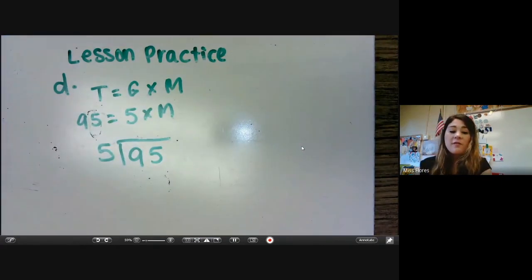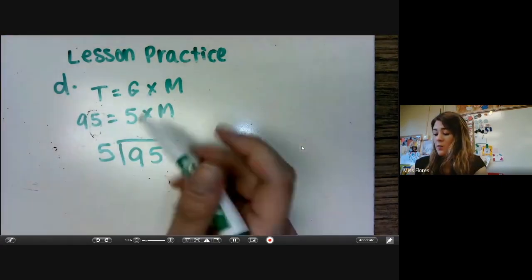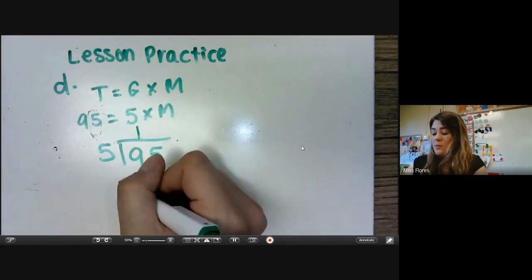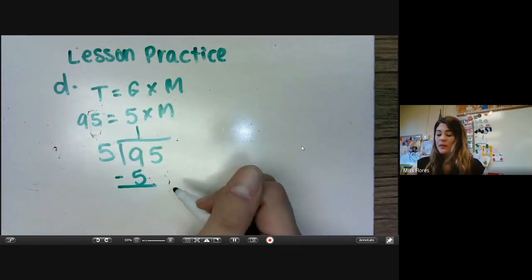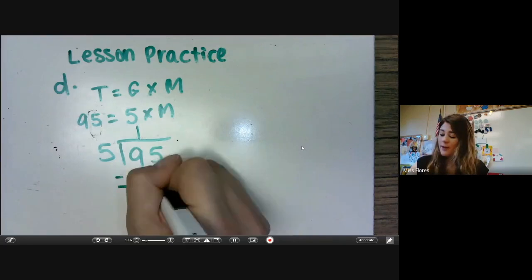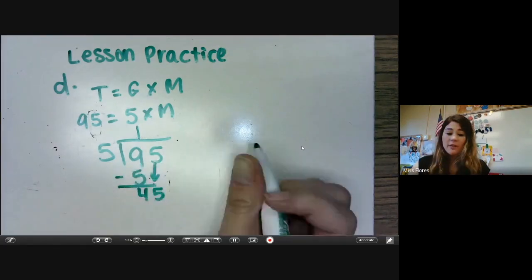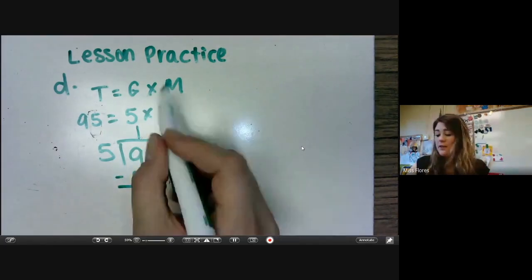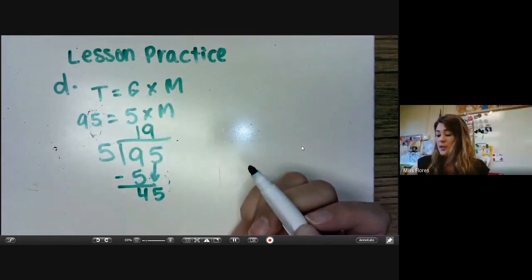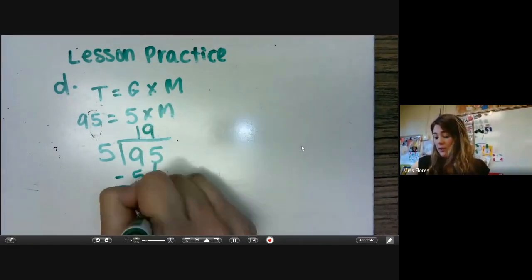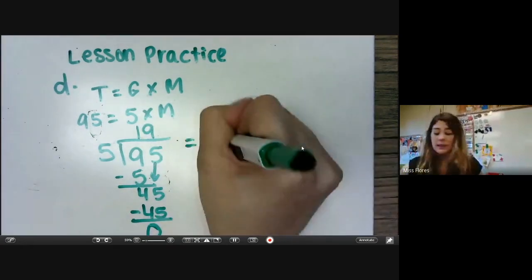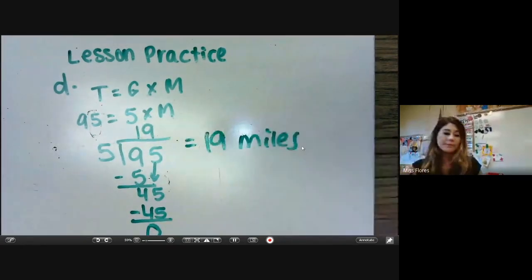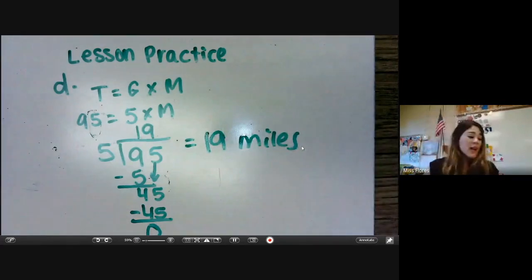So we need to do 95 divided by five. Five goes into nine one time. Five times one is five. So nine minus five is four. And then five comes down and makes it 45. Five goes into 45 nine times. Nine times five is 45. 45 minus 45 is zero. So we get 19 miles. That's it for today.